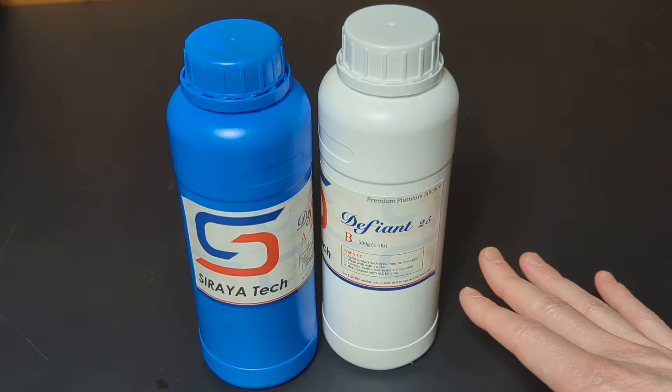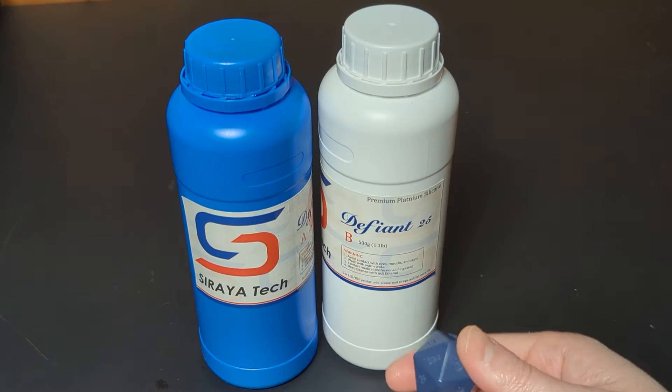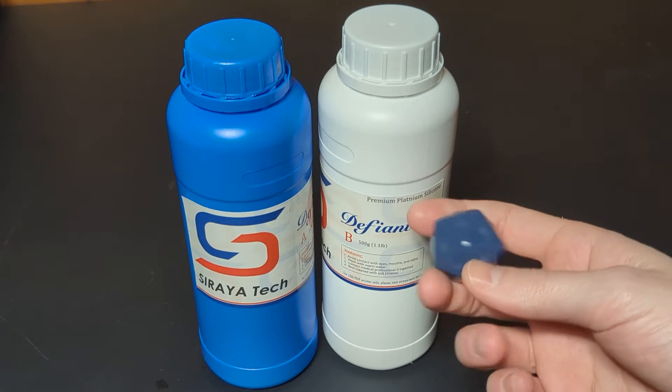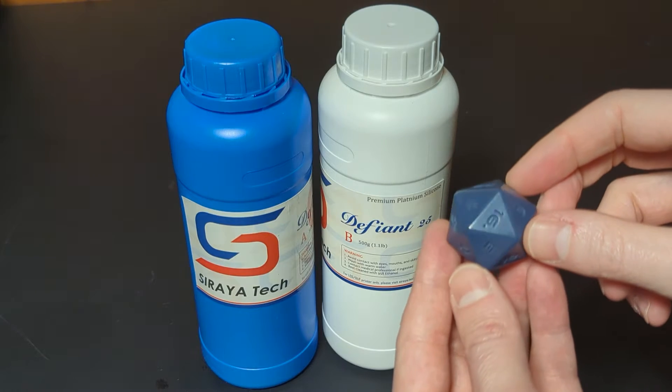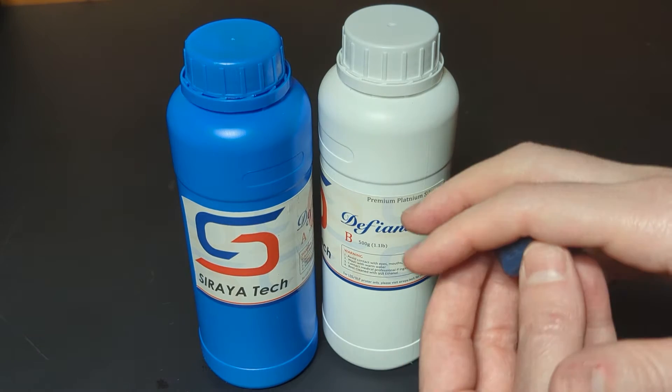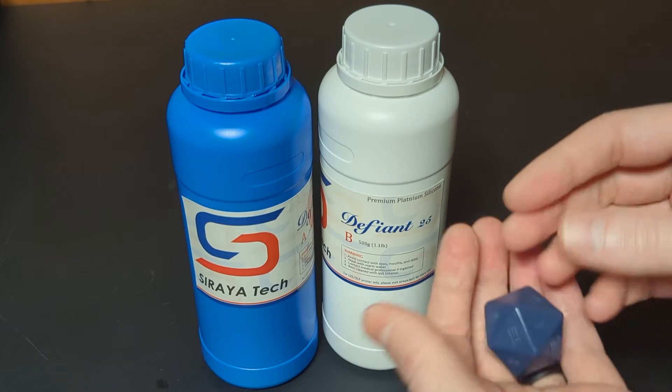Meaning when you create your mold of your resin printed object, it cures all the way and is totally solid. There's not mushy, liquidy leftover where it touches the actual resin part, right?